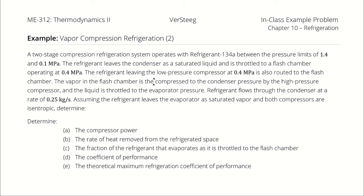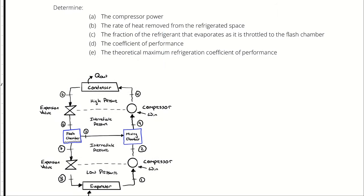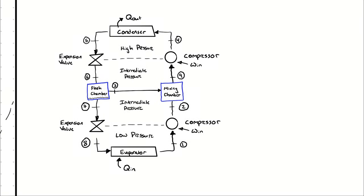There is a lot to unpack in this problem. We were given a low pressure, a high pressure, and an intermediate pressure, as well as a single mass flow rate. We were told that the exit of the condenser is a saturated liquid — not supercooled or compressed. Similarly, the outlet of the evaporator is a saturated vapor, and both compressors are isentropic. Because we have two-stage refrigeration with a flash chamber operating as an intercooler, we're going to have the same cycle diagram as from our previous video. I will identify these nine state points and try to determine enthalpies.